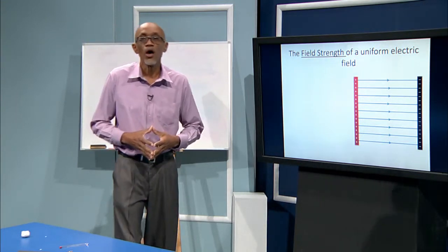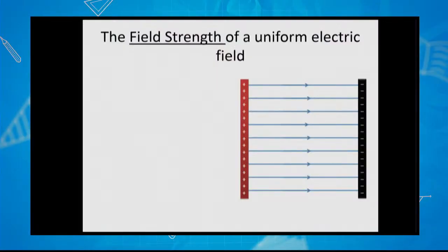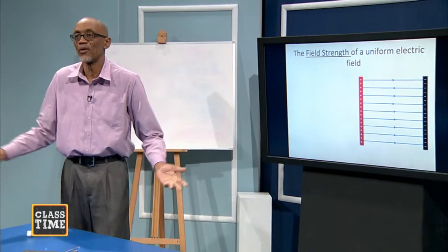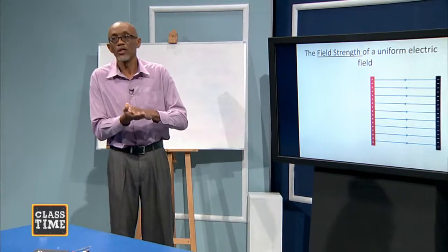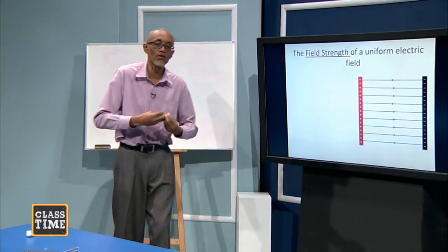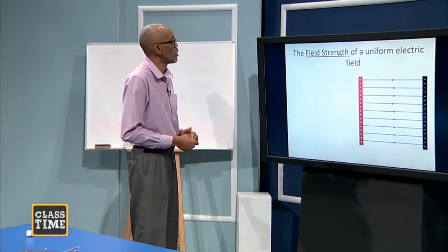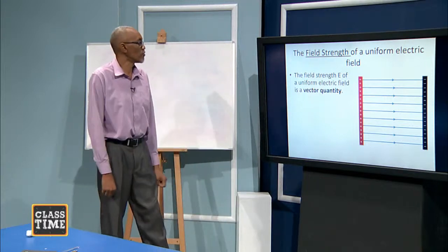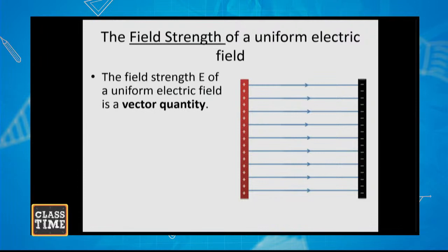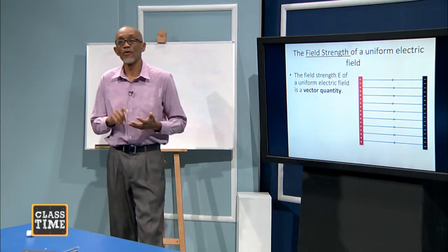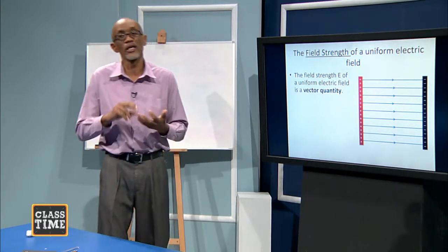We will engage with a term called the field strength — how strong is the field. Some fields are stronger than others. The field strength of a uniform electric field is a vector quantity — that's the first thing. Field strength is a vector quantity, so it has magnitude and it has direction. If we are going to talk about field strength, we'll have to speak about its magnitude and its direction.